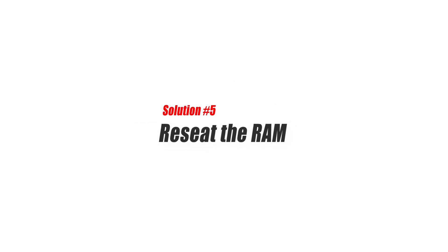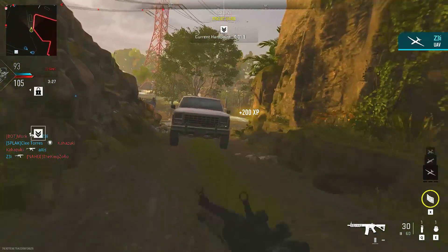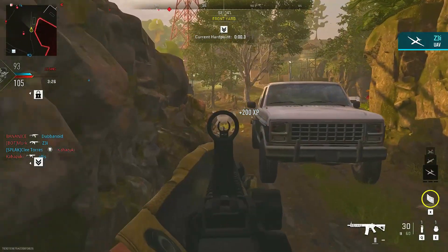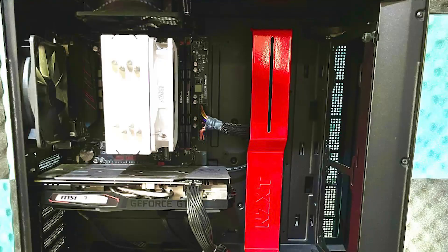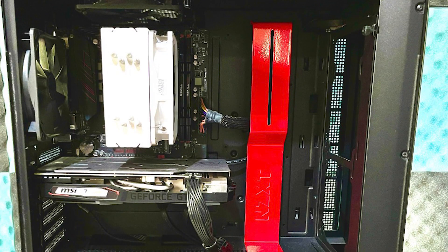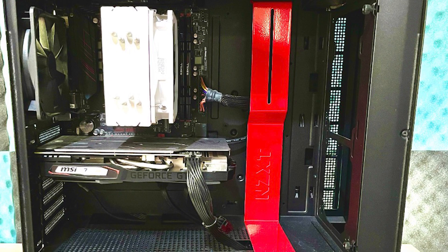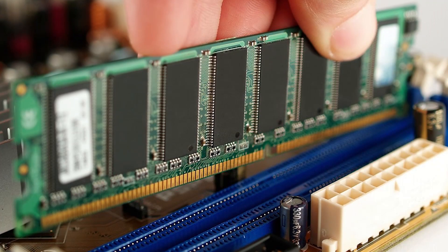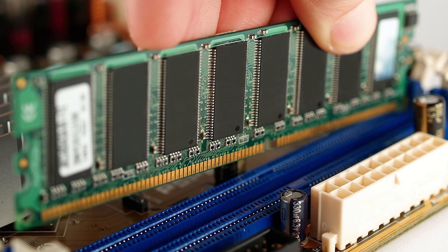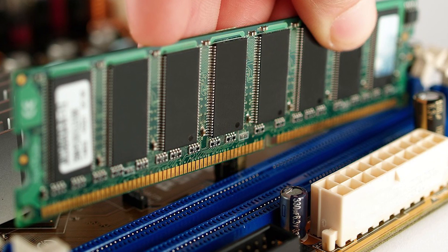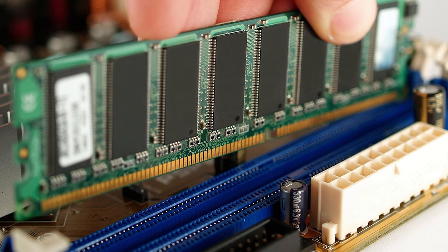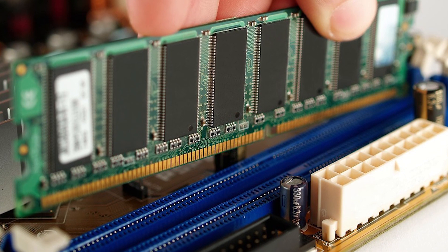Solution number five: reseat the RAM. Sometimes the RAM cards may become loose in the motherboard, which can lead to all sorts of memory errors including the page file issue. First, make sure that you turn off your computer and unplug it from the power outlet. Then check your RAM by opening your CPU case and removing the RAM chips one by one. Finally, reconnect the RAM and see if that fixes the issue.